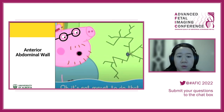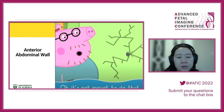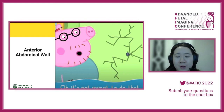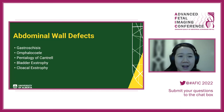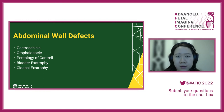Moving on to the anterior abdominal wall — that's where there seems to be an opening where there shouldn't be. Abdominal wall defects I'll cover include gastroschisis and omphalocele, which are the more common entities, and then rarer ones: pentalogy of Cantrell, bladder exstrophy, and cloacal exstrophy.